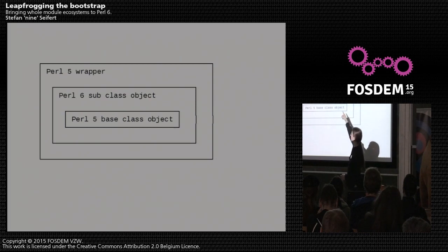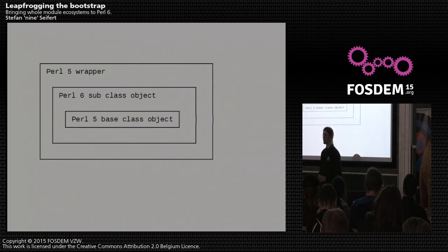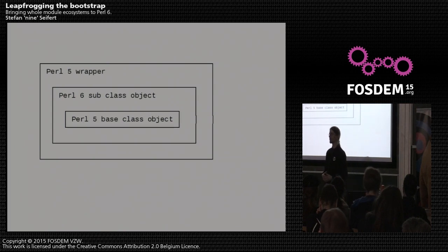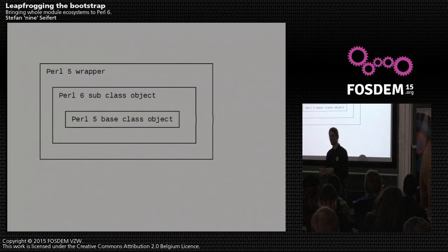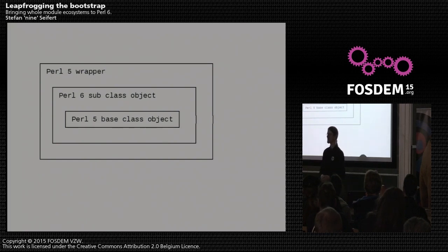In memory, it pretty much looks like this: you have the Perl 5 base class object, and it's wrapped in a Perl 6 subclass object. Whenever a method is called on this Perl 6 object, it either provides it itself or delegates down to the underlying Perl 5 object. This works regardless of whether the caller is Perl 6 or Perl 5 code, because if we pass this Perl 6 object to Perl 5 code, it gets wrapped again in a Perl 5 wrapper object. Lots of wrapping, lots of delegating — that's why I call this inheritance by delegation.